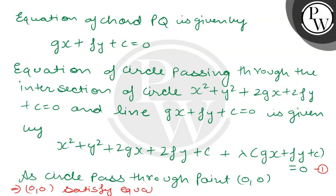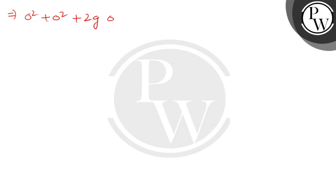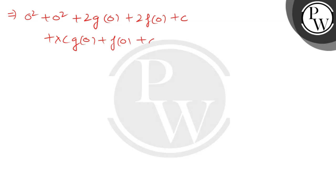Since the circumcircle passes through the origin (0, 0), we substitute x = 0, y = 0 into the equation. This gives: 0 + 0 + 0 + 0 + c + λ·c = 0, which implies c + λc = 0, and therefore λ = −1.